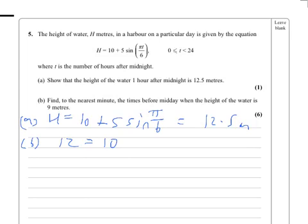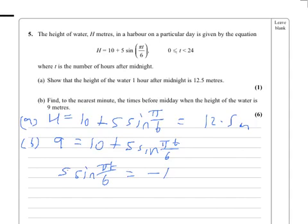Will it let me? Nope. See if I can rub it out. Yep, that's all right. So height is 9 equals 10 plus 5 sine π t by 6 for some values of t. So clearly 5 sine π t by 6 equals minus 1. Divide that down here, we get that.